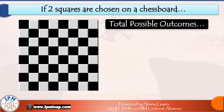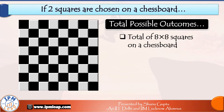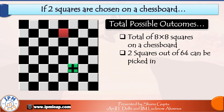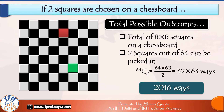We need to know the total number of possible ways in which this can be done. Since there are a total of 8 rows and 8 columns on a chess board, the total number of squares is 8×8 which is 64. Out of these, two squares can be chosen in 64C2 ways. So our total possible outcomes of this random experiment is 64C2, which evaluates to 2016.